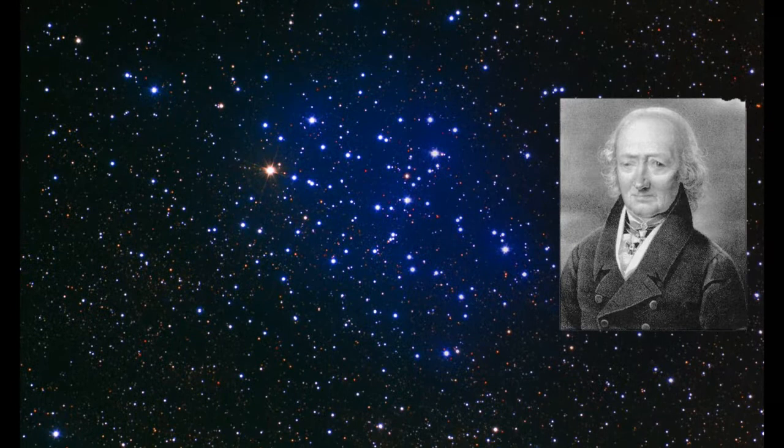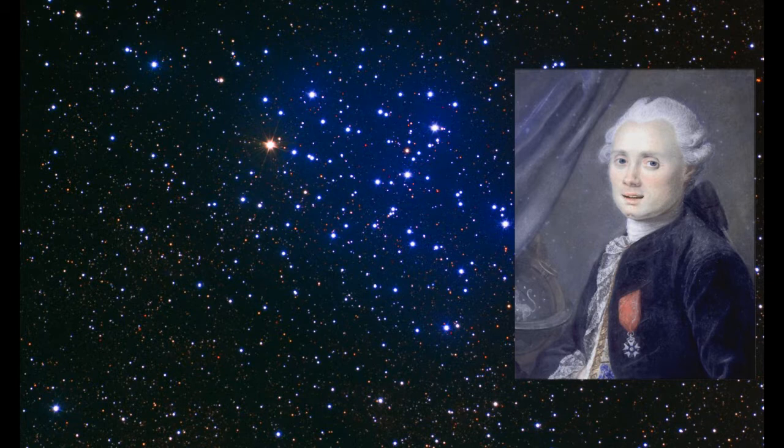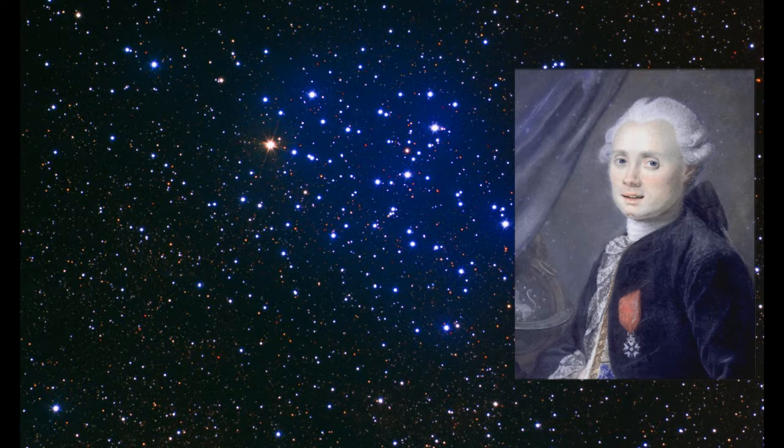Charles Messier listed this object in 1764. A cluster of small stars between the bow of Sagittarius and the tail of Scorpius. To the naked eye this cluster seems to form a nebula without stars, but even with the smallest instrument one sees a cluster of faint stars.